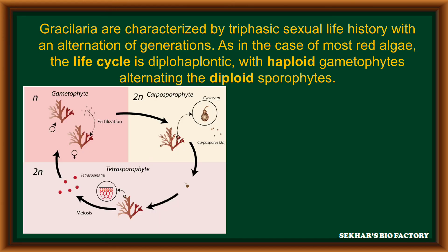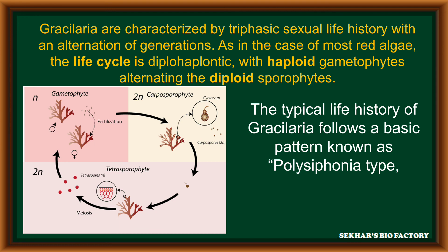Gracilaria is characterized by a triphasic sexual life history with an alternation of generations. As in the case of most red algae, the life cycle is diplohaplontic, with the haploid gametophyte alternating with the diploid sporophyte. The typical life cycle of Gracilaria follows a basic pattern which is seen in the Polysiphonia life cycle.